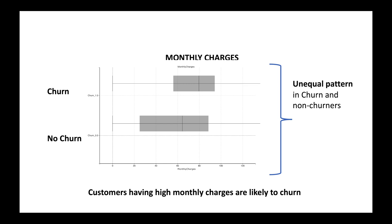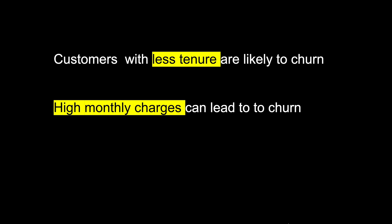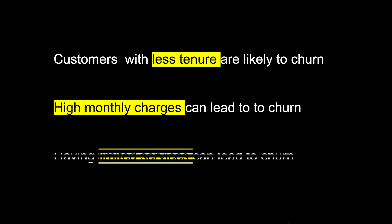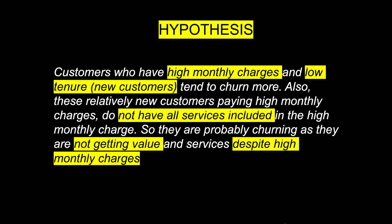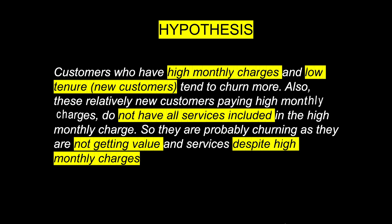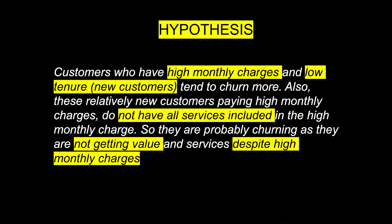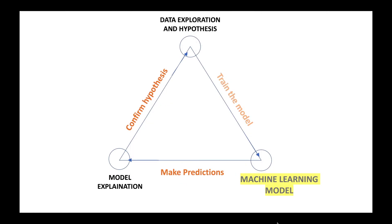Based on the data exploration we can make the following observations: customers who have less tenure are likely to churn, high monthly charges are also reasons to churn, and customers with limited services are likely to churn. We can make the following hypothesis: customers who have high monthly charges and low tenure tend to churn more. These relatively new customers paying high monthly charges probably do not have all the services included, so they are churning as they are not getting value despite the high monthly charges.